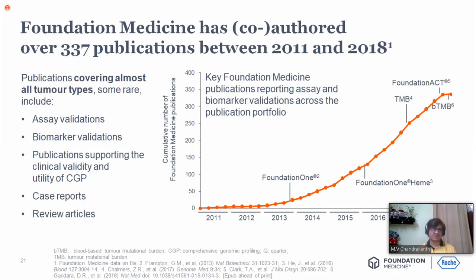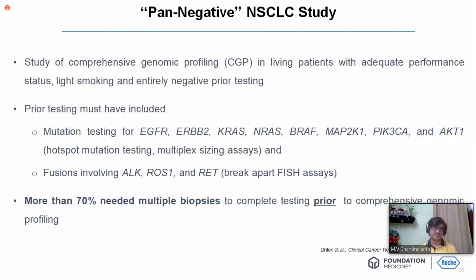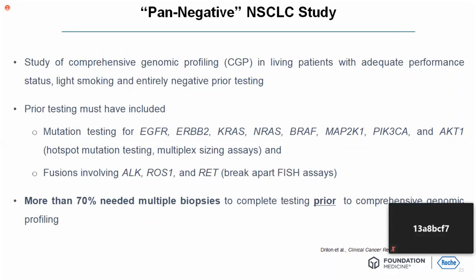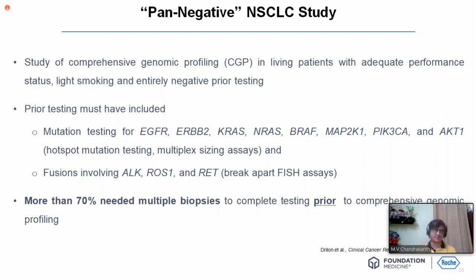FMI has co-authored over 337 publications from 2011 to 2018, with publications continuing in solid, liquid, and immuno-oncology spaces. One study examined pan-negative NSCLC patients with adequate performance status and light smoking history, who were entirely negative on prior testing including EGFR, HER2, KRAS, NRAS, BRAF, MAP kinase, PIK3CA, AKT hotspot mutation testing, multiplex sizing assays, and fusions involving ALK, ROS, and RET. More than 70% of these patients needed multiple biopsies to complete testing prior to comprehensive genomic profiling — illustrating that tissue is an issue.